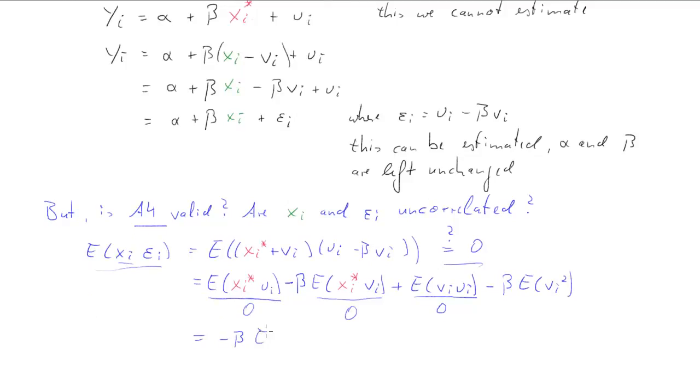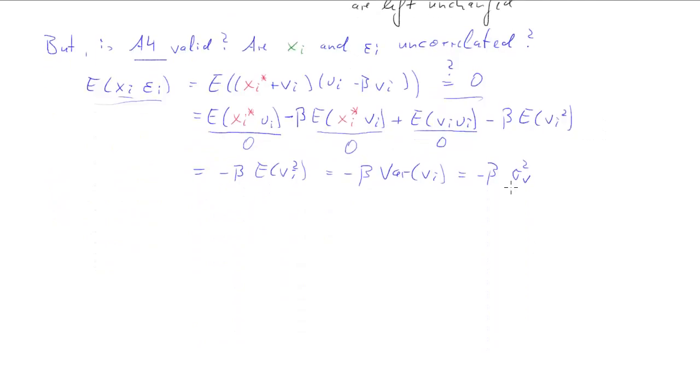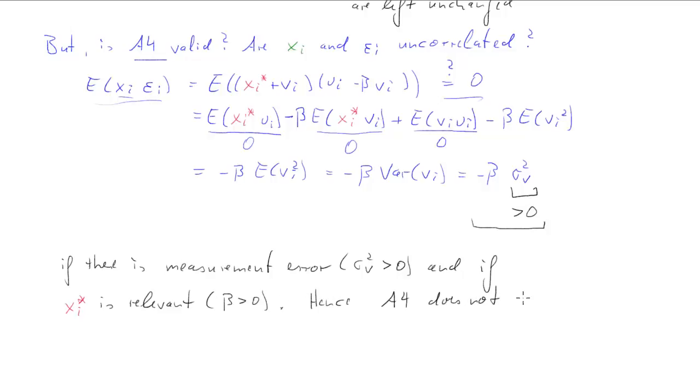The problem with A4 we'll see only comes through the measurement error. So there's one term left, expected value of vi squared times negative beta. Expected value of vi squared is just the variance of vi which we label sigma squared v. Now that variance is usually going to be larger than zero, and hence the entire term is going to be unequal to zero if there's measurement error, i.e. the variance is larger than zero, and if the explanatory variable xi asterisk is actually relevant, that means beta should actually be unequal to zero here.